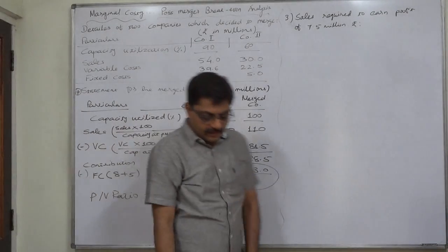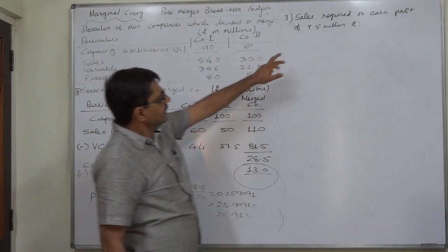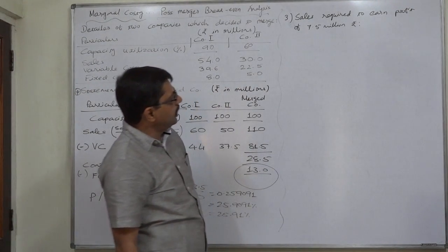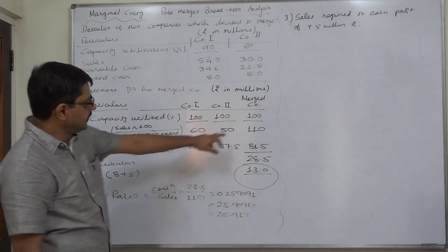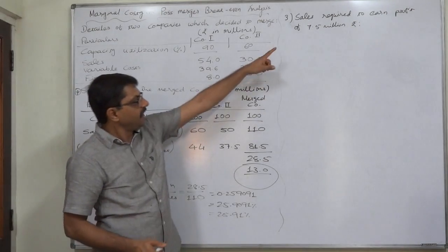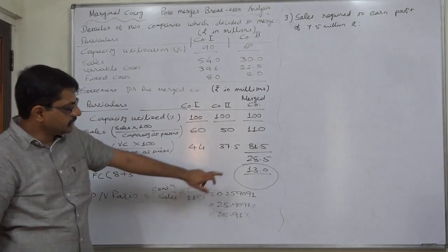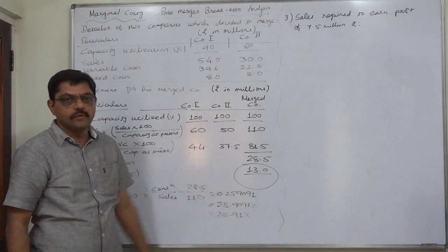Hello and welcome back. Now the point to be covered is: calculate sales required to earn profit of 7.5 million rupees in case of the merged company. 7.5 million profit plus 13 million fixed cost, that means total contribution of 20.5 million is to be earned.